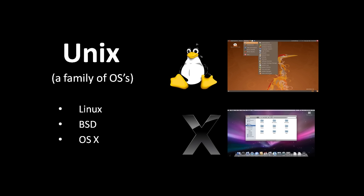Both Linux and BSD, short for Berkeley Software Distribution, are Unix-like operating systems that are free and open source and developed by a scattered community around the world.